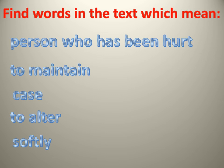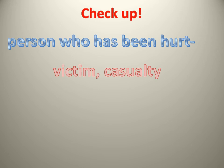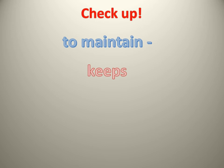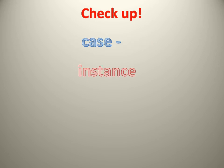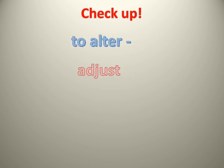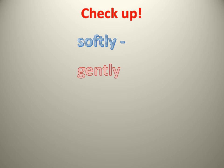Your task is to find words in the text which mean: person who has been hurt, to maintain, case, to alter, softly. Let's check: person who has been hurt is a victim or casualty. To maintain means keeps. Case means instance. To alter means adjust. Softly means gently.